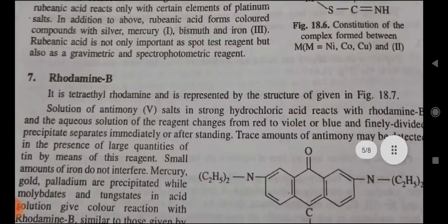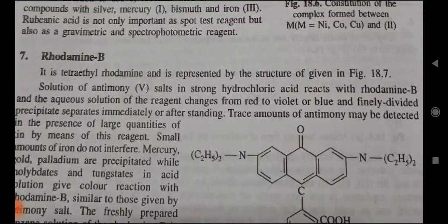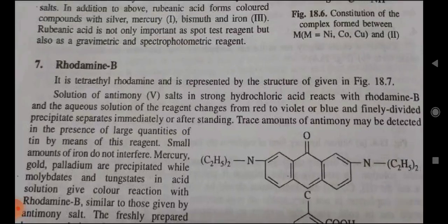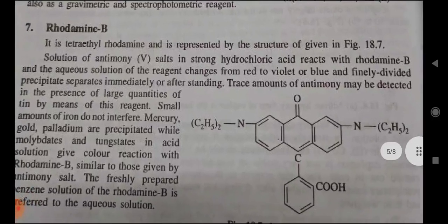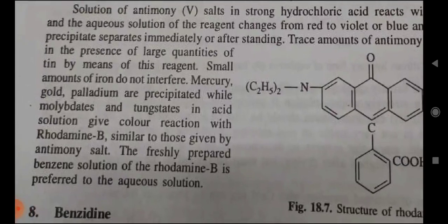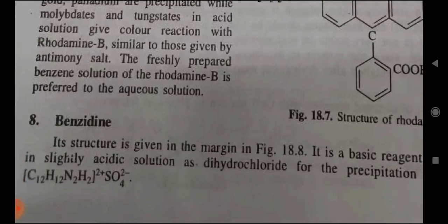Seventh — Rhodamine B: it is a tetraethyl rhodamine, represented by the structure given in figure 18.6. Solutions of antimony salts in strong hydrochloric acid react with rhodamine, and the aqueous solution of the reagent changes from red to violet or blue, and finally a colored precipitate separates immediately or after standing. Trace amounts of antimony may be detected in the presence of large quantities of tin by means of this reagent. Small amounts of iron do not interfere. Mercury, gold, platinum, and tungsten in acid solution give color reactions with rhodamine B similar to those given by antimony salts.